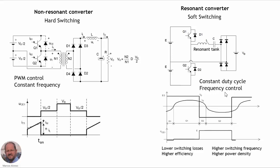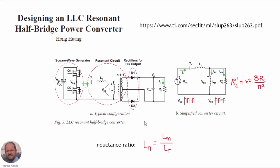The main advantages of these converters are that we are going to have lower switching losses and therefore higher efficiency. Also, because the switching losses are lower, we can increase the switching frequency and obtain at the end a higher power density for our converter. So this is a very interesting solution in many applications. Today we are going to focus on the LLC resonant converter, which is a very popular converter for many applications.